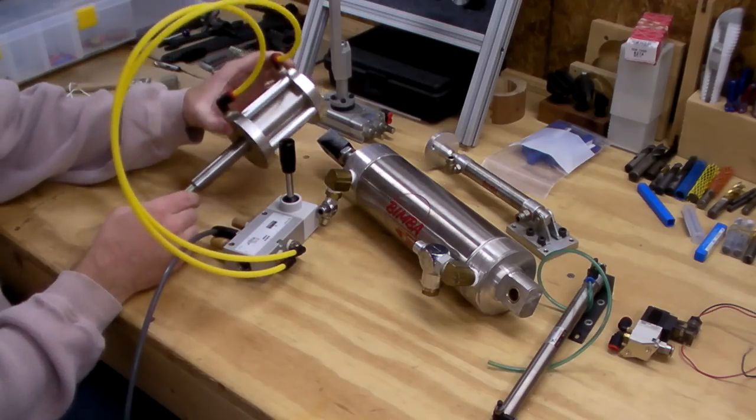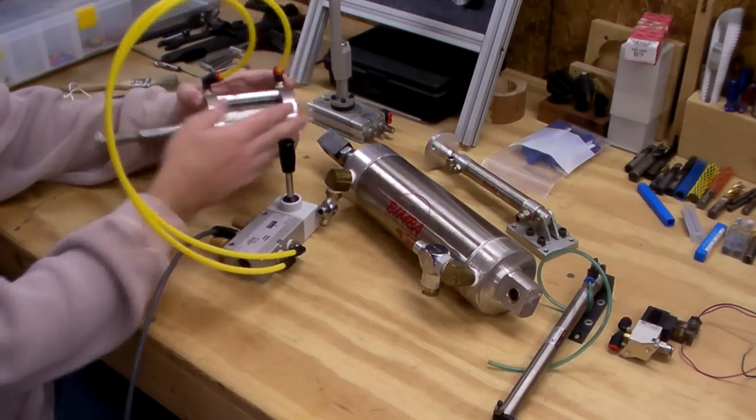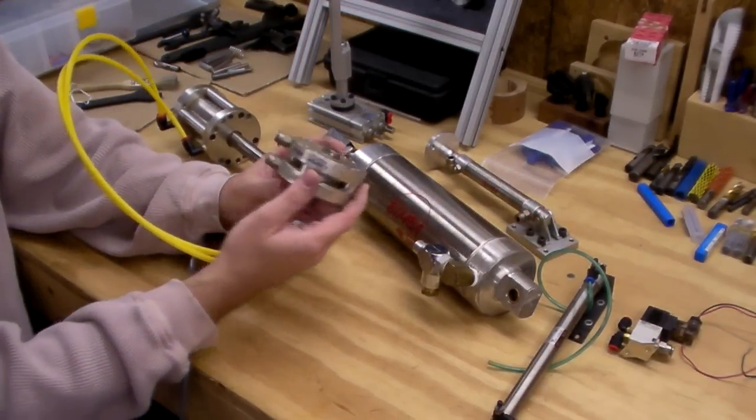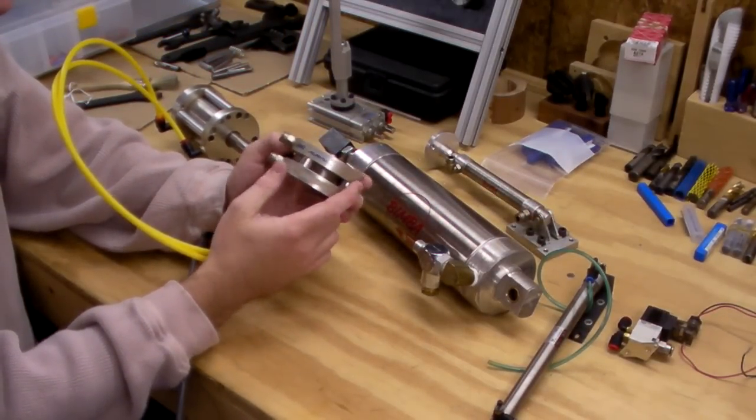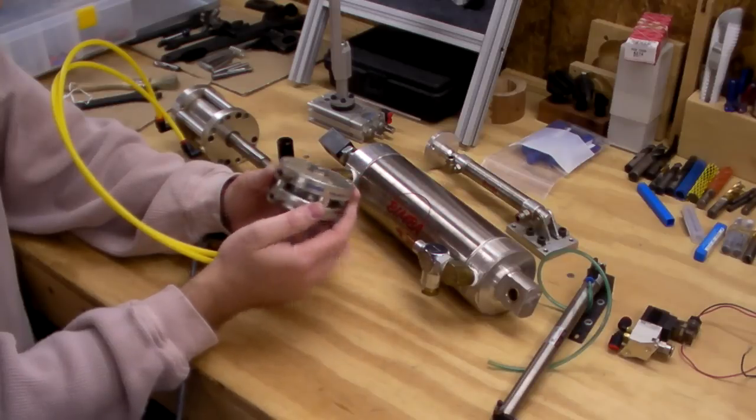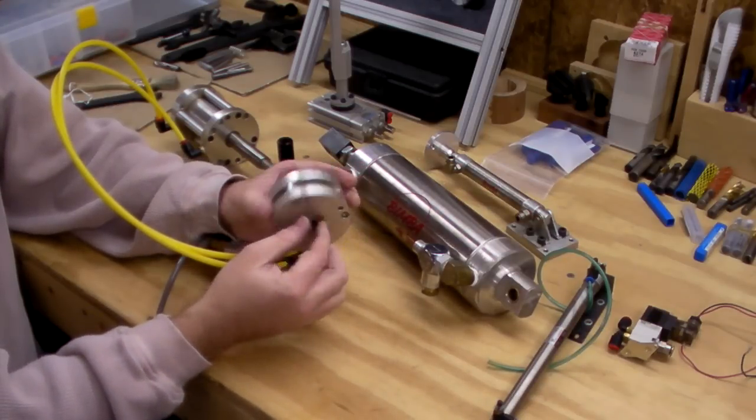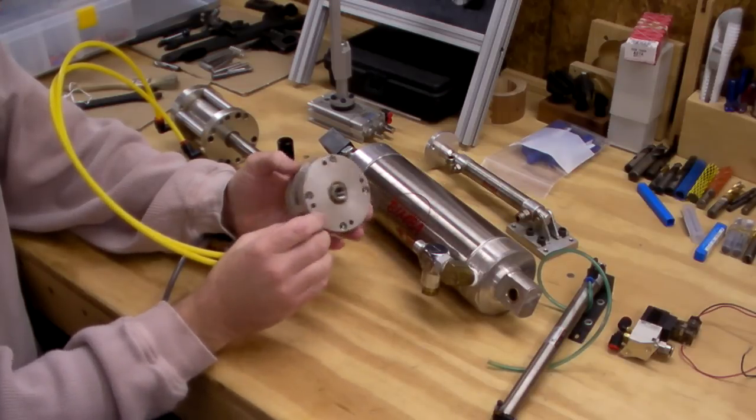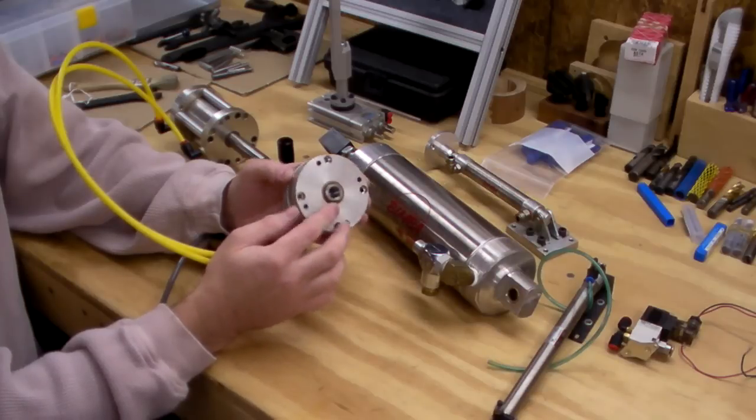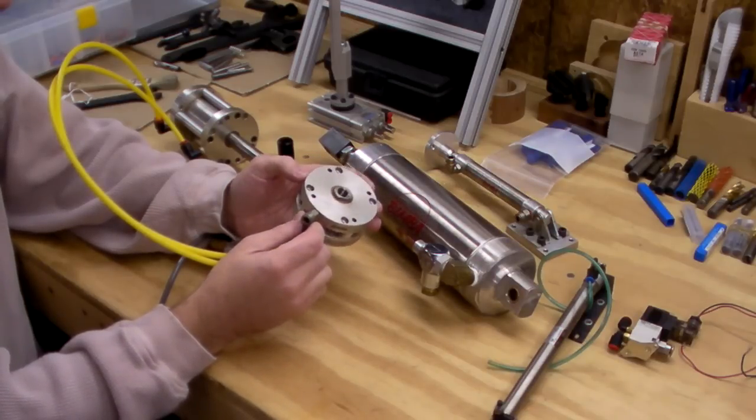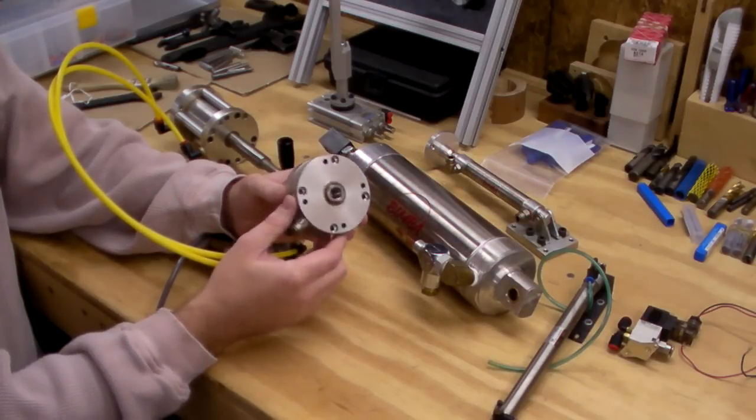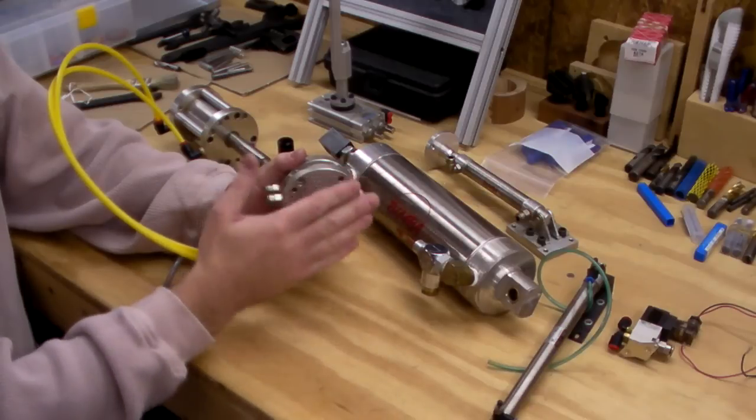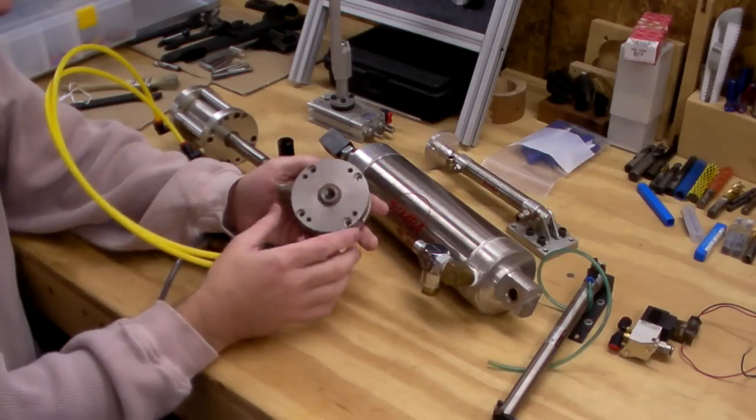These are usually called pancake cylinders because obviously they look like a pancake. This one drives that point home even more. This is made by Bimba and it's a flat cylinder. Very little extension from the cylinder, I'm not even sure what it is, might be a half inch or so. But this would be great for a clamping fixture or something where the movement isn't that large, you just need the pressure behind it.